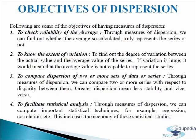Next, we come to the objectives of measurement of dispersion. As we have seen in the example, the measure of central tendency is not sufficient to describe a distribution of values. Hence, we need to have a measure of dispersion. The first objective is to check the reliability of the average. Through measures of dispersion, we try to find out whether the average so calculated represents the series truly or not.